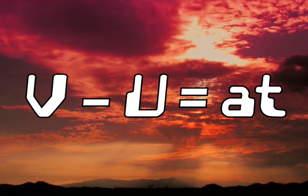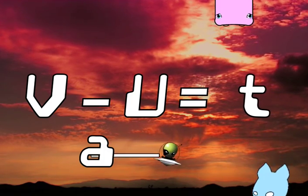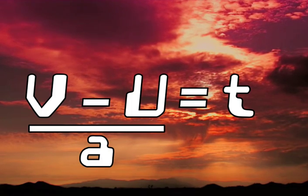Now, as a is times by t, we need to get t on its own. So, we take a over to the other side and it now becomes a divide. We now have t on its own.